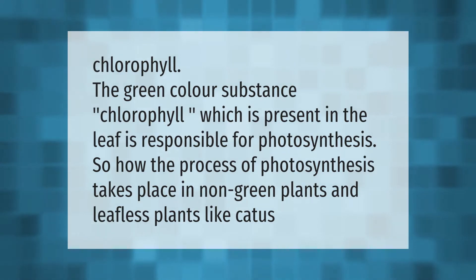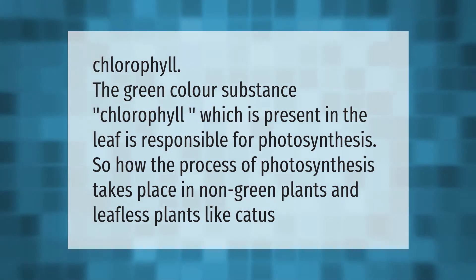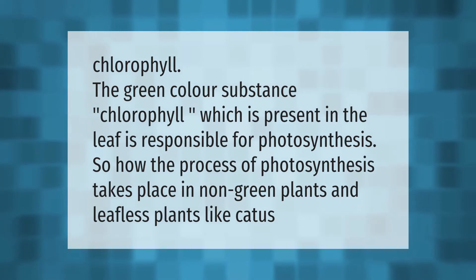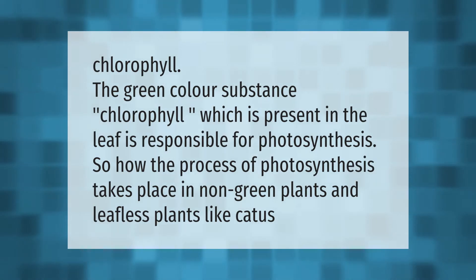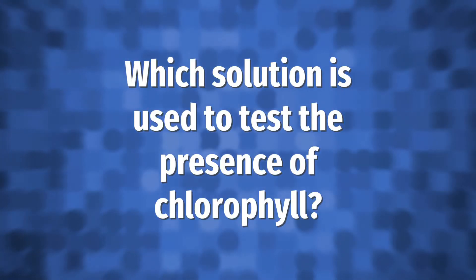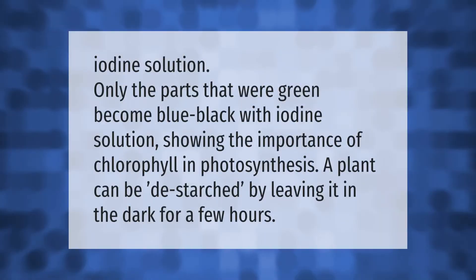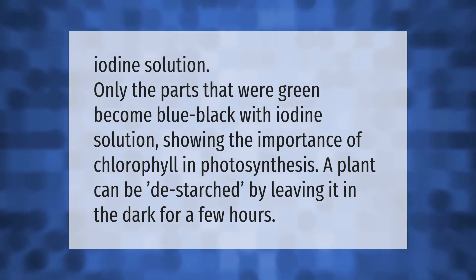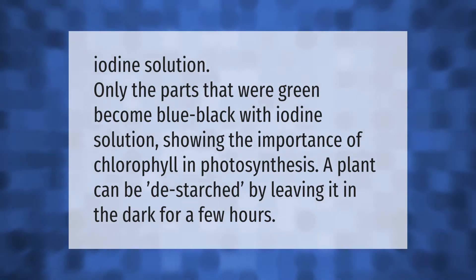Chlorophyll, the green color substance present in the leaf, is responsible for photosynthesis. So how does the process of photosynthesis take place in non-green plants and leafless plants like cactus? With iodine solution, only the parts that were green become blue-black, showing the importance of chlorophyll in photosynthesis.